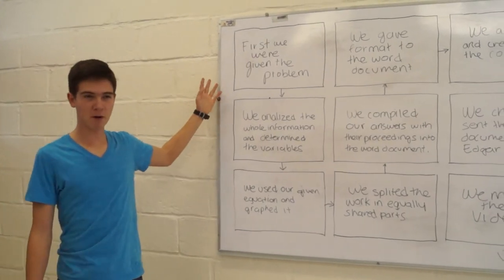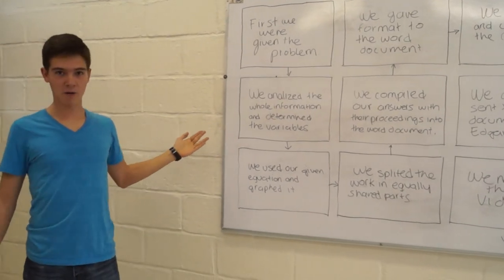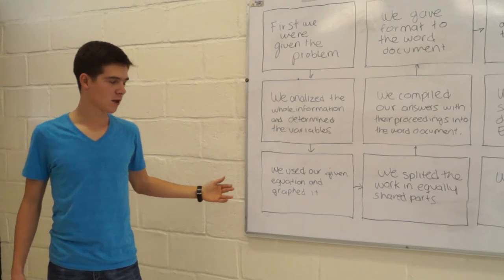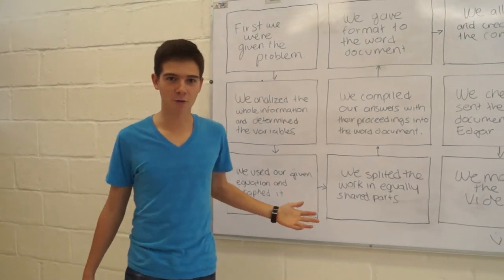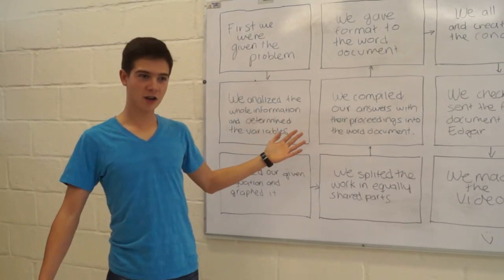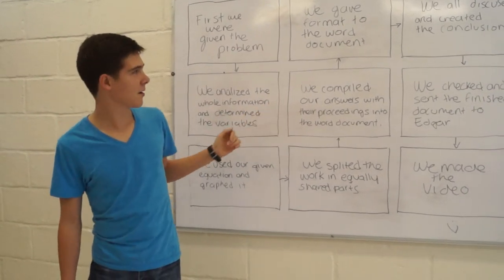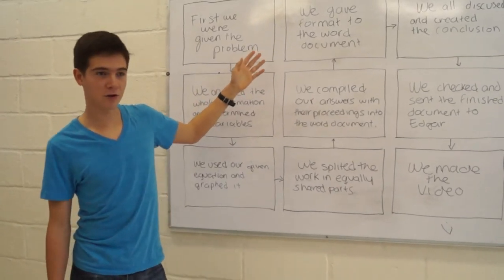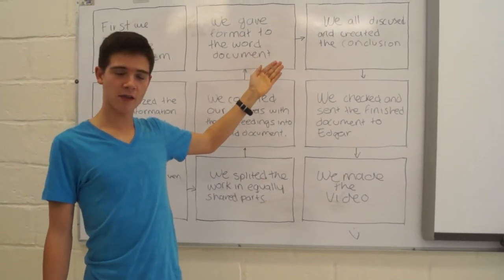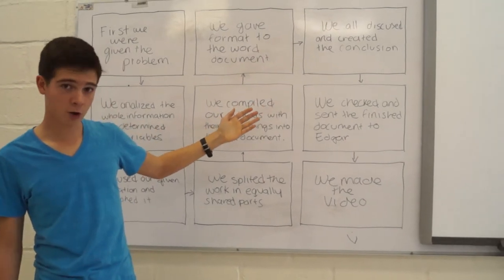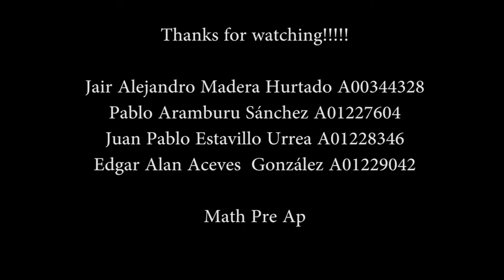For the closure, first we were given a problem, and then we analyzed the information and defined the variables P and T. Then we used our given equation and graphed it. We separated the work in different parts, we answered it and compiled our answers and put them into a Word document. Then we made the format, and then we all discussed to get the conclusion, and we did the introduction. We double-checked the document and sent it to our teacher, and then we made the video. Thank you.